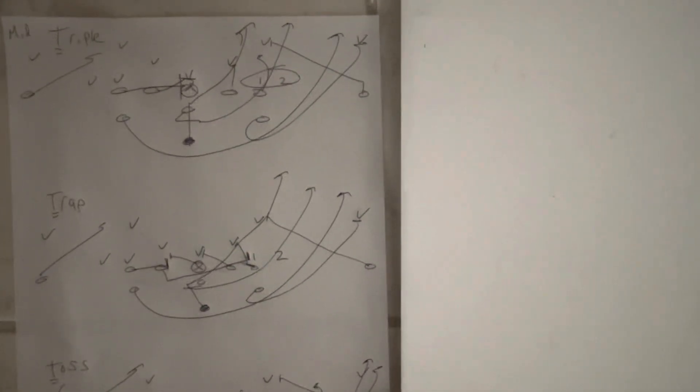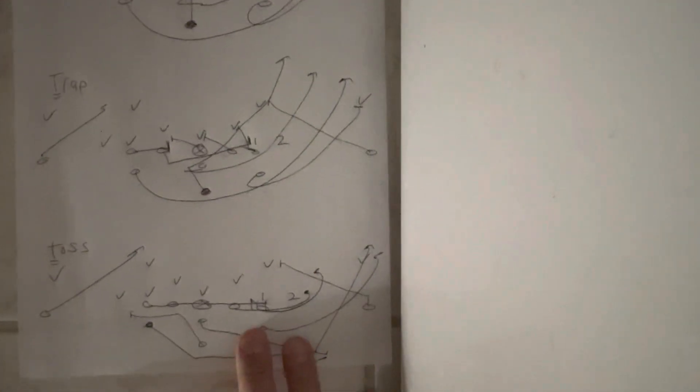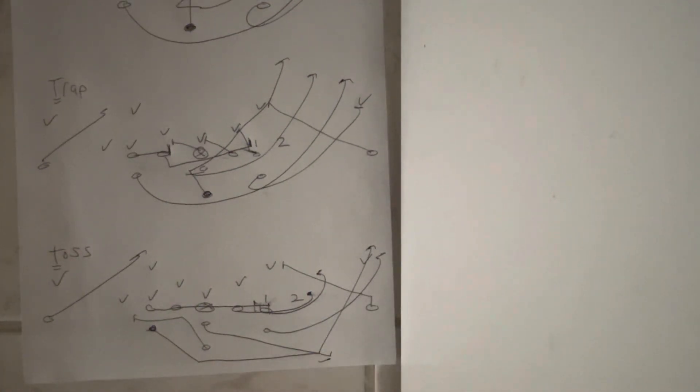So those are the three T's. So basically you're going to come out, you're going to run mid-triple. If you get four yards on it, run it again. If you don't, run the trap. If you don't get four yards on the trap, you've got to toss it outside. Obviously you've tried to run it up inside. That didn't work too well. Now you're going to toss it. If that doesn't work, you're either going to throw it on the field or you're going to punt.